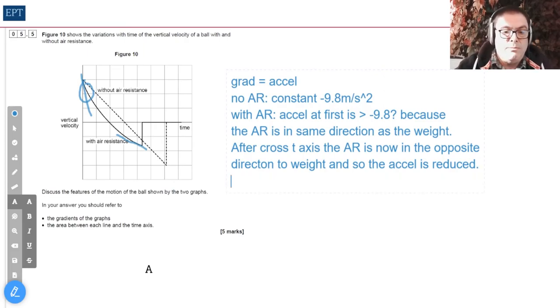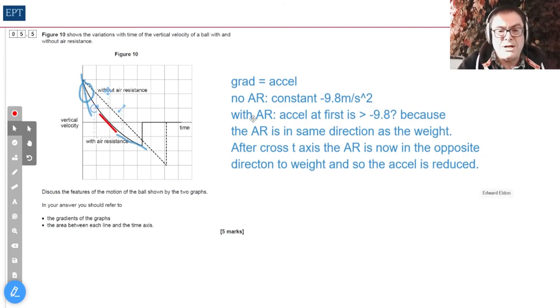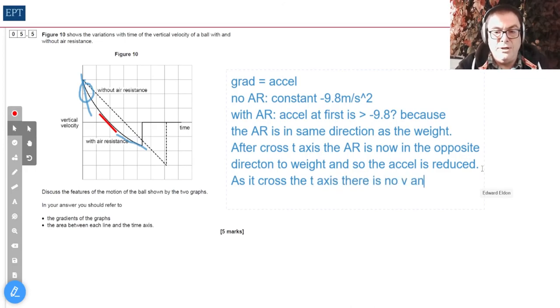But what happens when it crosses the axis? If you look real careful at the point where it crosses the axis, we'll put a line on to show this. If we take the gradient at the point where it crosses the axis, you should see that it's parallel to the dotted line, which is actually to be expected because at that point we've got no air resistance because it's not moving. As it crosses the t-axis, there is no v and so no air resistance, and so acceleration is equal for both balls.